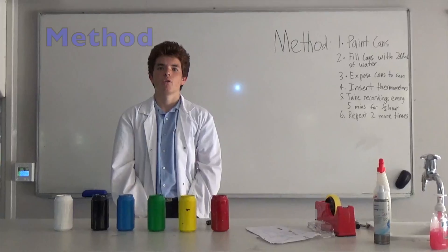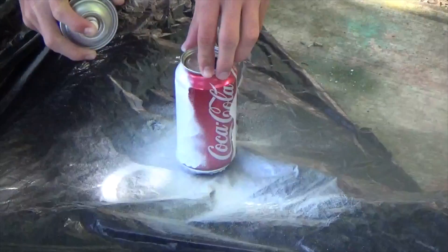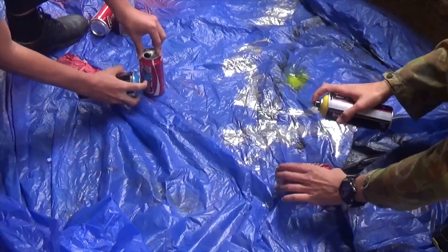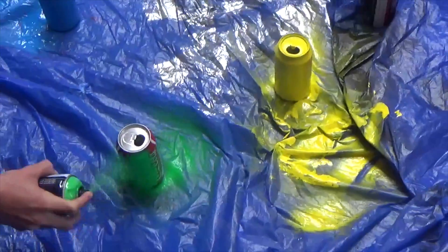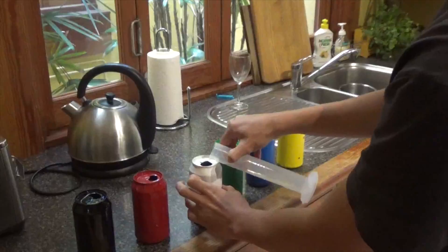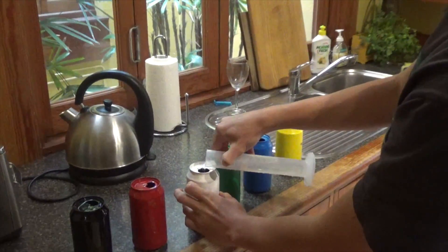First, we will paint the outside of each can with a different colored paint. This will leave us with six uniquely colored cans. Once the paint has dried, we will fill each can with 248 milliliters of water.